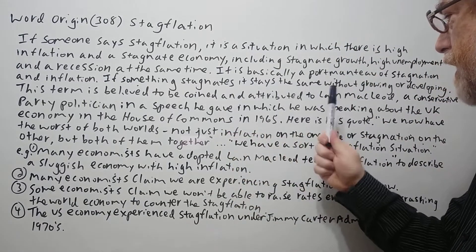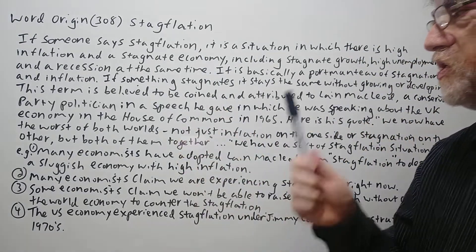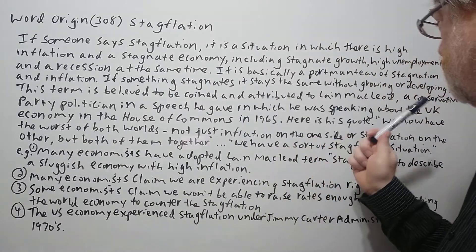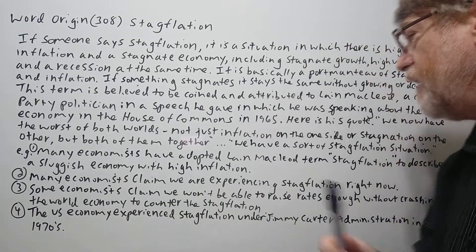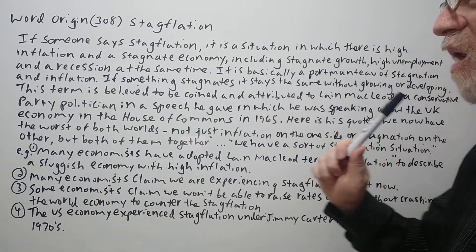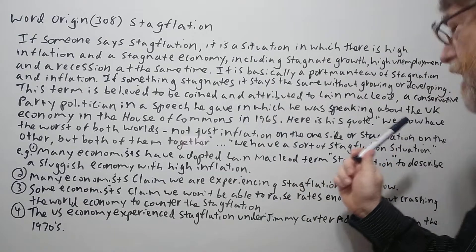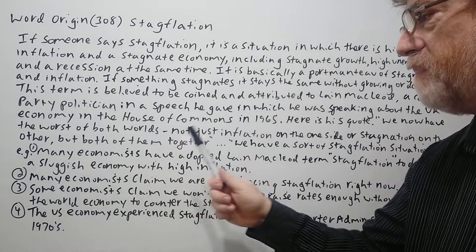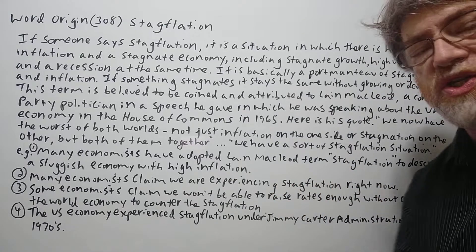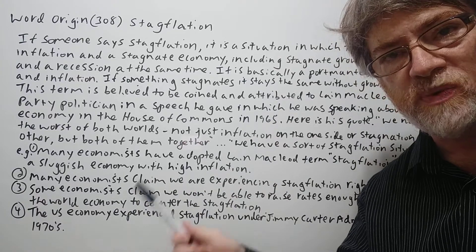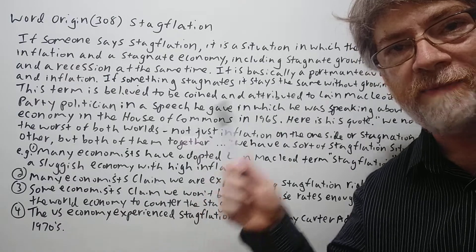The term is believed to be coined and attributed to Iain Macleod, a Conservative Party politician, in a speech he gave about the UK economy in the House of Commons in 1965. His quote: "We now have the worst of both worlds — not just inflation on one side or stagnation on the other, but both together." He later says "we have a sort of stagflation situation," and many economists took it from his speech. That's how we got the word stagflation.